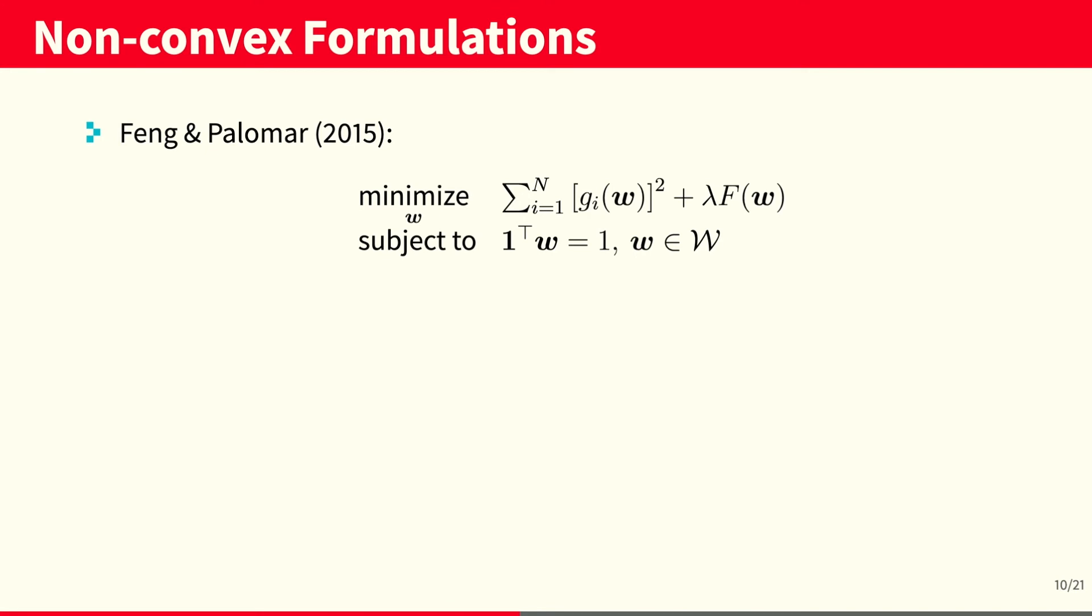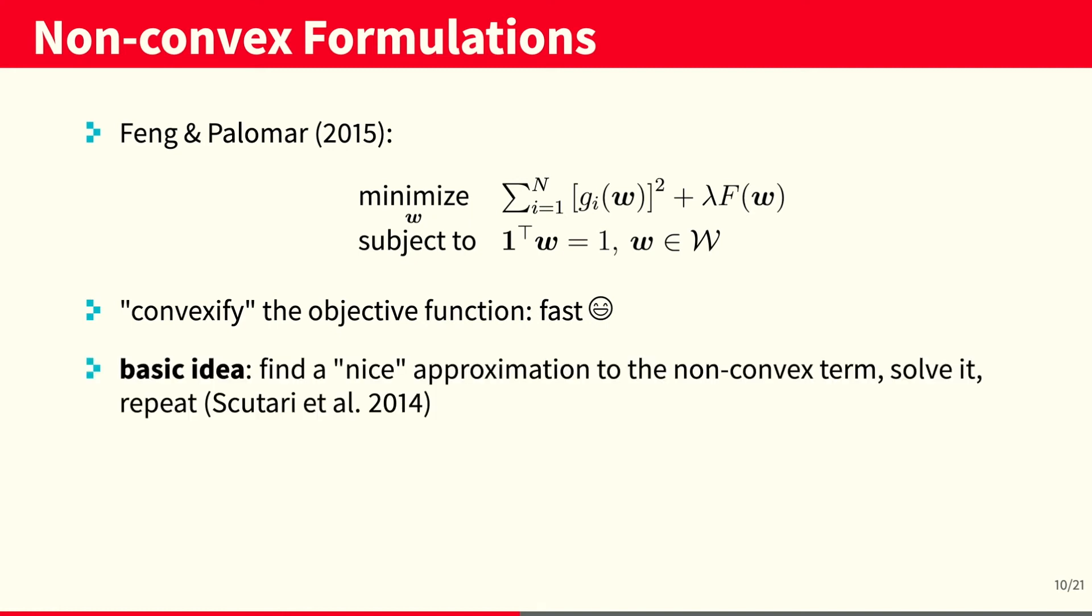In 2015, Feng and Palomar took advantage of the non-convex structure of this optimization problem and proposed a very nice algorithm. The basic idea is to convexify the objective function. It turns out that this algorithm is pretty fast. So, the basic idea is to find a nice approximation to the non-convex term, solve it and repeat.